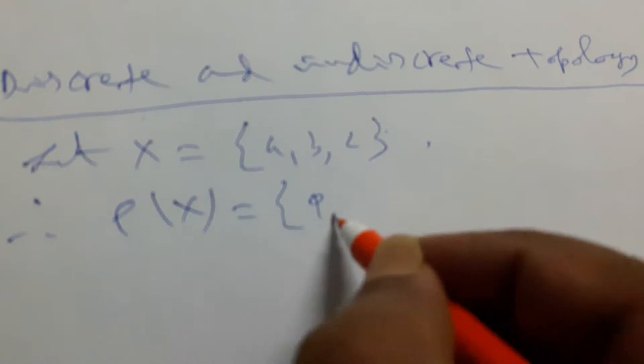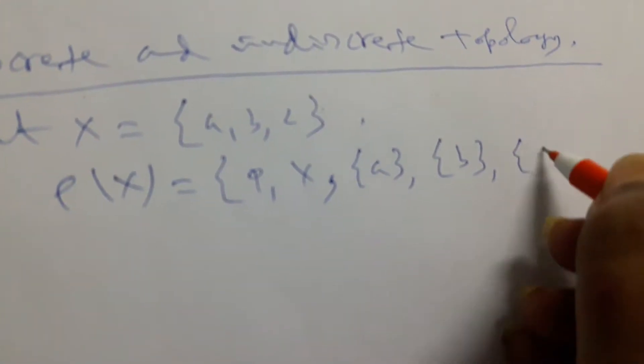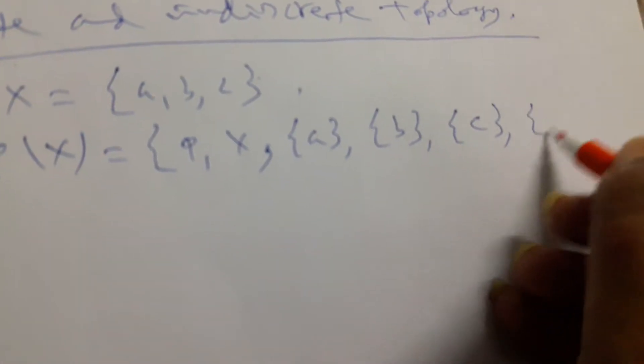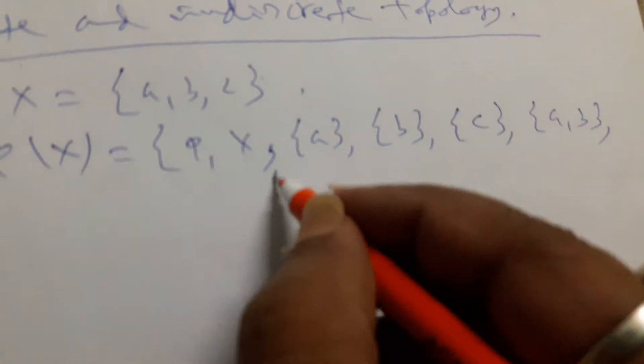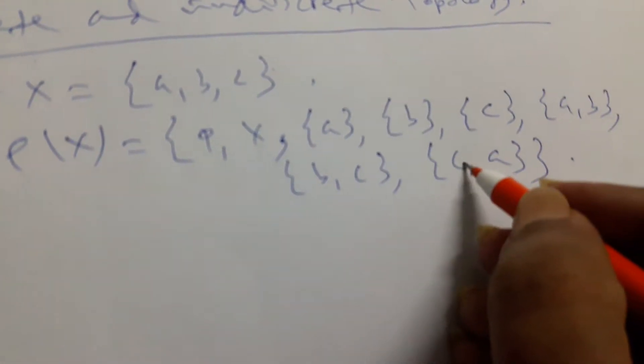be the subfamily of X containing φ, X, {a,b,c}, {a,b}, {b,c}, and {c,a} - all the eight members.